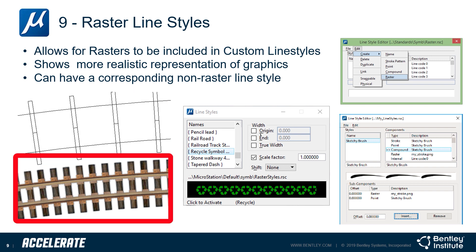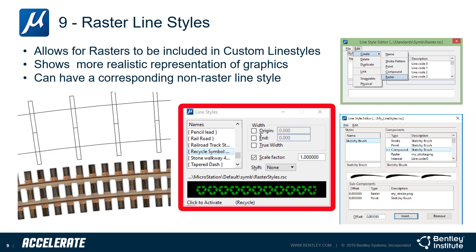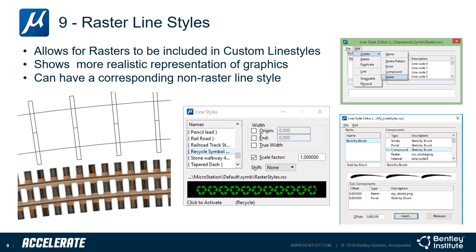The lower example is a raster custom line style defined by a repeated raster image of the railroad track. Raster line styles are extremely useful and are effective in producing high-quality and highly efficient drawings. Let's take a look at 3D and raster line styles in the MicroStation CONNECT Edition.